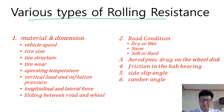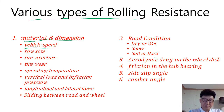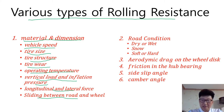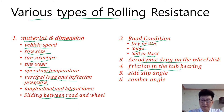Various types of rolling resistance are related to the following factors. As for material and dimension: vehicle speed, tire size, tire structure, tire wear, operating temperature of tire, vertical load and inflation pressure, longitudinal and lateral force sliding between road and wheel. As for road condition: dry or wet, dry or wet snow, soft or hard. Also: aerodynamic drag on the wheel disc, friction in the hub bearing, side slip angle, camber angle, etc.